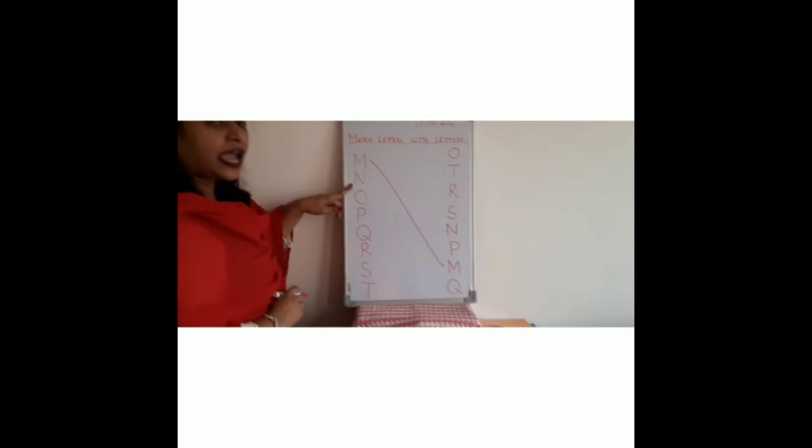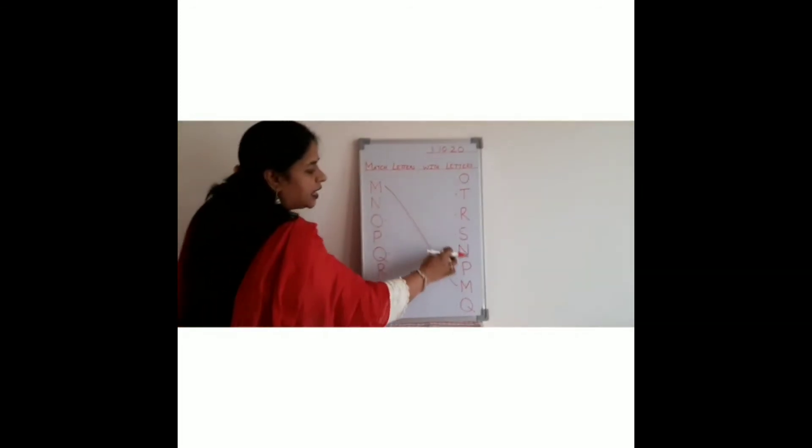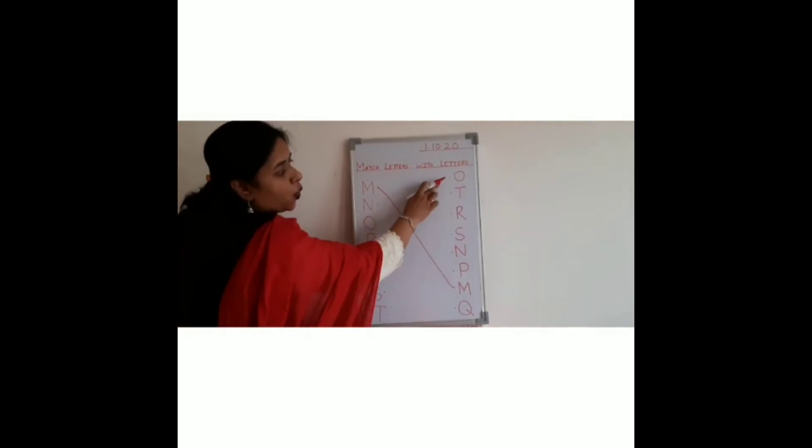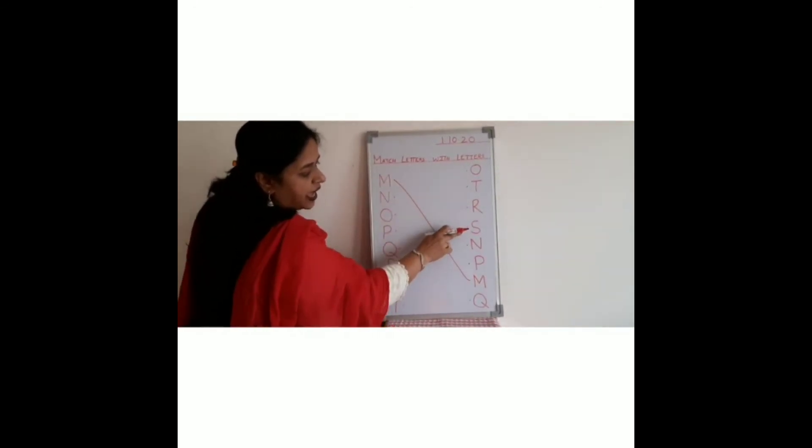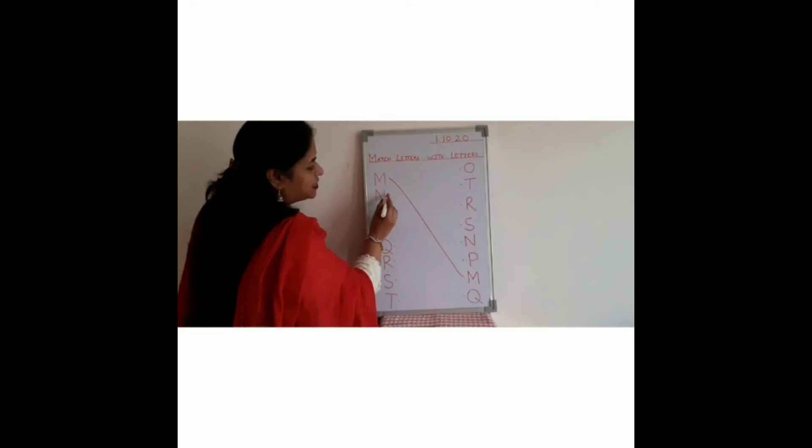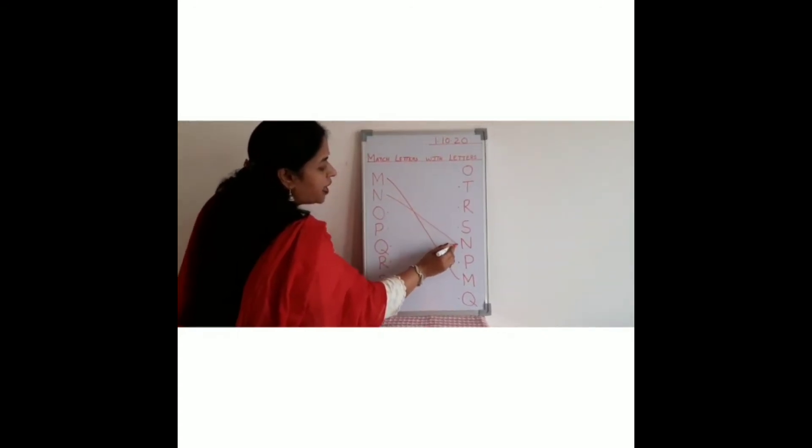Now see, the second letter is N. Now we have to see here where the line is. O, T, R, S, N. Yes. So we will match N to N.